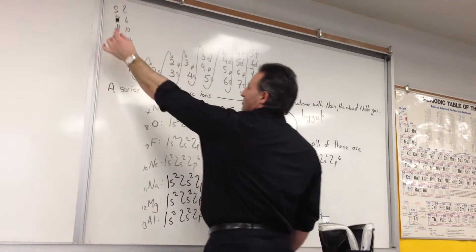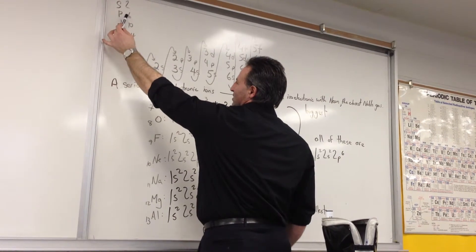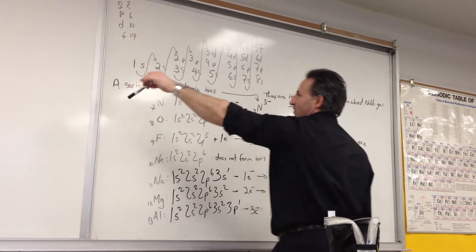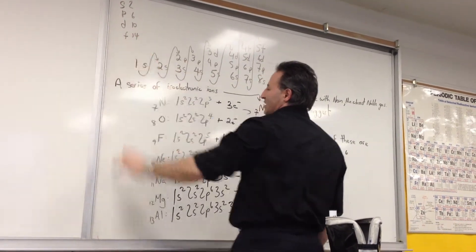S shells hold a maximum of two electrons. P shells hold a maximum of six. D shells hold a maximum of ten. F shells hold a maximum of fourteen.